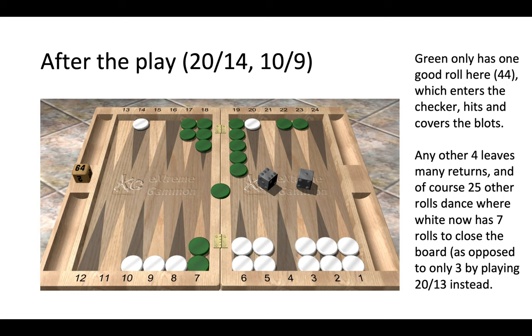If green were to roll a 4-1, the four comes in from the bar, but then how does he choose to play the one? Does he make his own two point, safetying those blots in his home board, or does he hit us in the outfield, thus exposing himself to getting hit back when we enter from the bar? He'll be very exposed in the outfield and we have the stronger home board. Really, there are not any downsides—the only downside is double four.